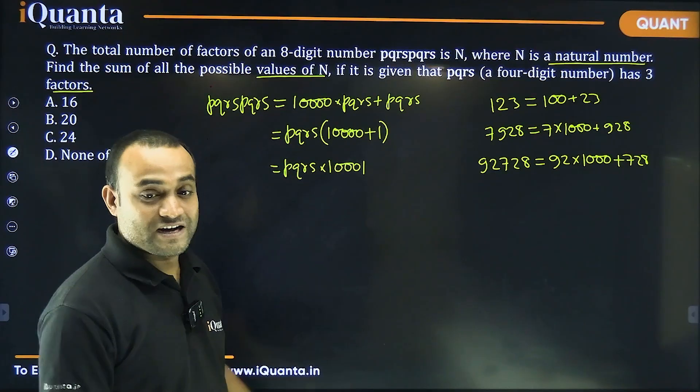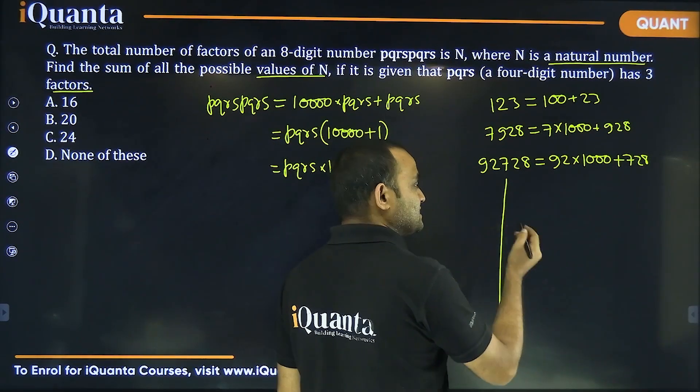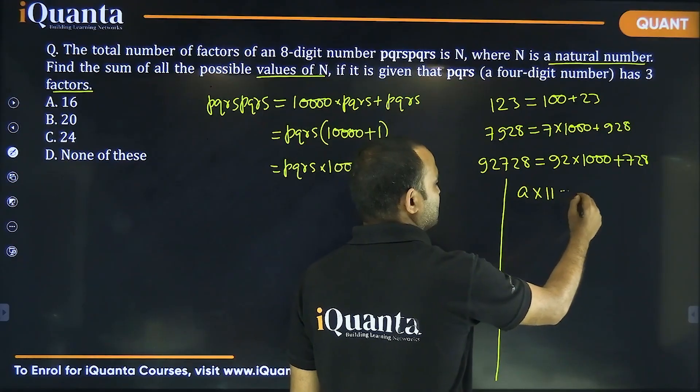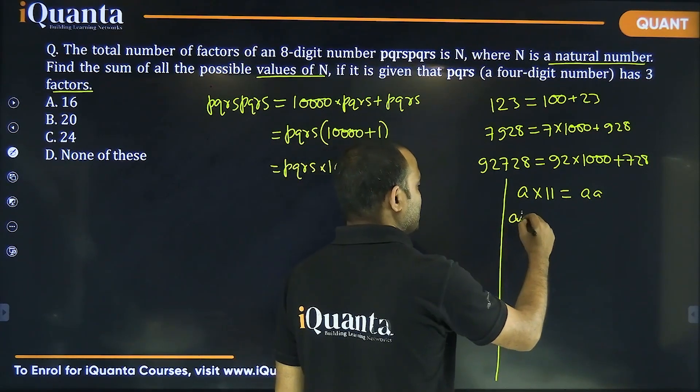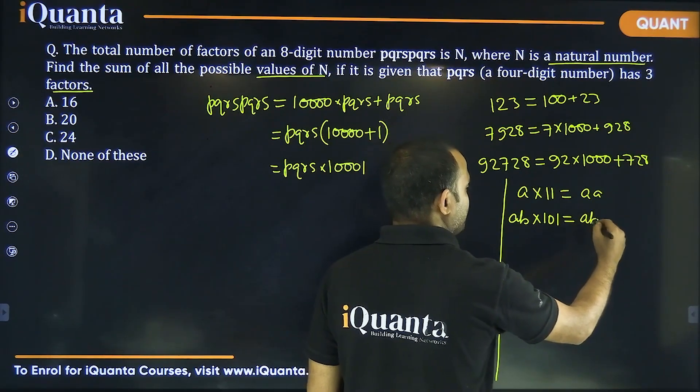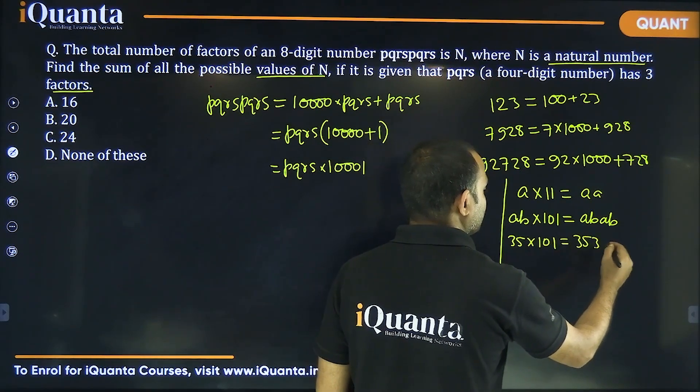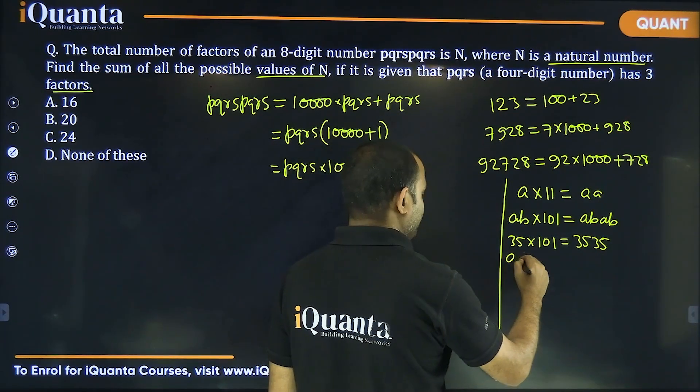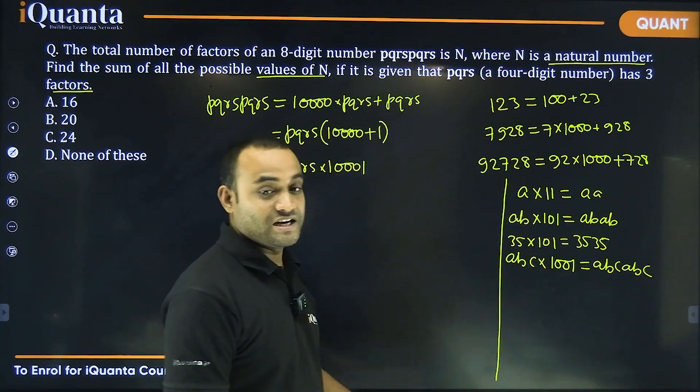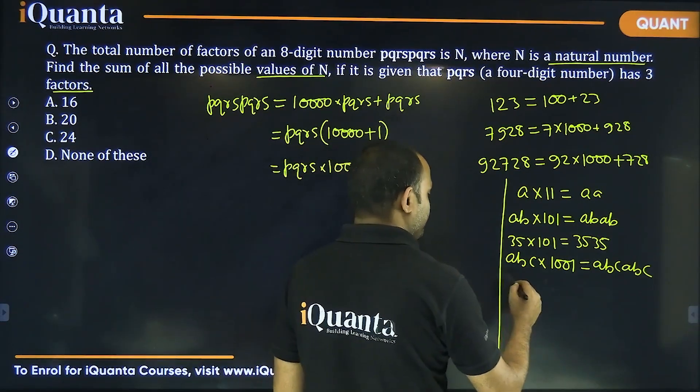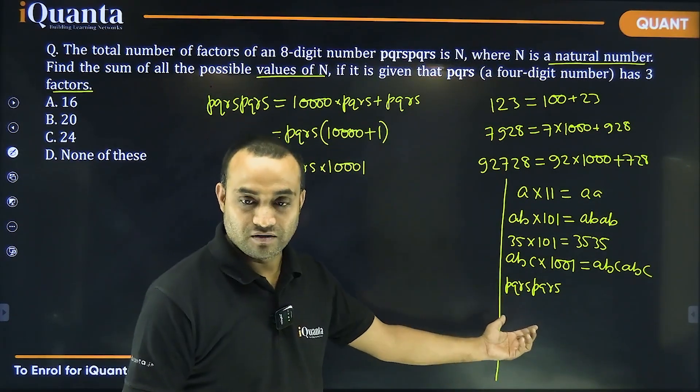Now, you can also find this factorization variously if you are aware of some calculations in case of numbers. If you have a single digit number, let's say A and you multiplied by 11, this digit will be repeated, like 2 into 11 is 22. Then if you have a two digit number AB, if you multiplied by 101, it will be ABAB, like if you multiply 35 by 101, you get 3535. Similarly, if you have a three digit number ABC, you multiplied by 1001, then this three digit number will repeat itself. Similarly, if you have four digit number PQRS, then what we can say is that one of the factors of this number is 10001 and then PQRS.